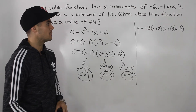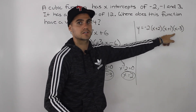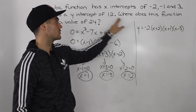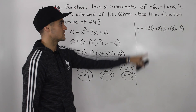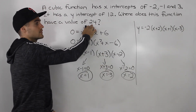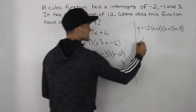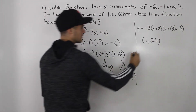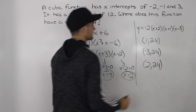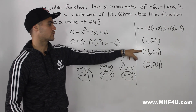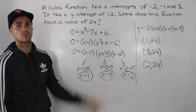You can verify these answers by plugging x = 1, x = −3, and x = 2 back into the original equation y = −2(x + 2)(x + 1)(x − 3) and confirming each gives y = 24. The answers can also be written as coordinates: (1, 24), (−3, 24), and (2, 24). That's another way they may ask you to express the answers — in coordinate form rather than just the x-values.